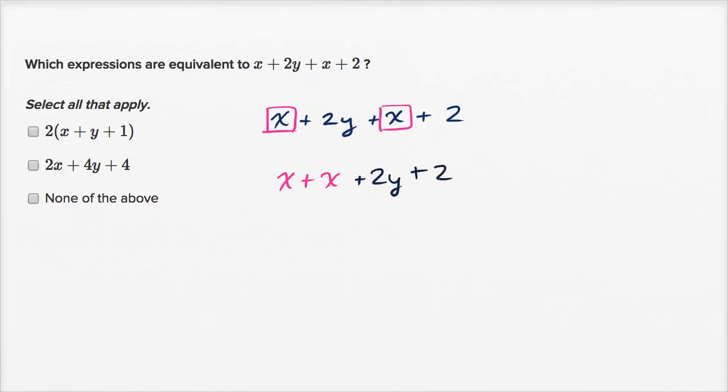And then these two x's right over here, I can just rewrite that as 2x. So I have 2x plus 2y, plus 2.